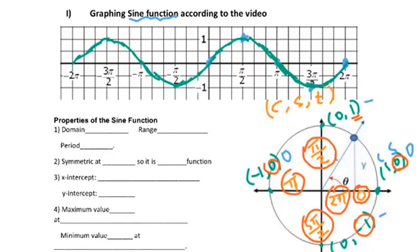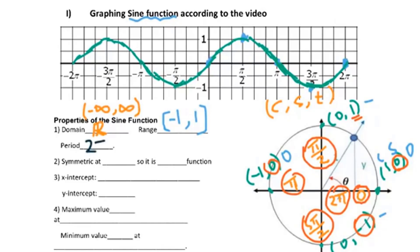So let's look at the properties of this sine function. Domain is definitely all real numbers, or you can write from negative infinity to positive infinity — either one is okay. Range means the highest and lowest value for y, which is between negative 1 to 1. Period means how long until it keeps repeating. You can see that's between 0 to 2 pi, so every 2 pi the graph repeats. So the period is 2 pi.